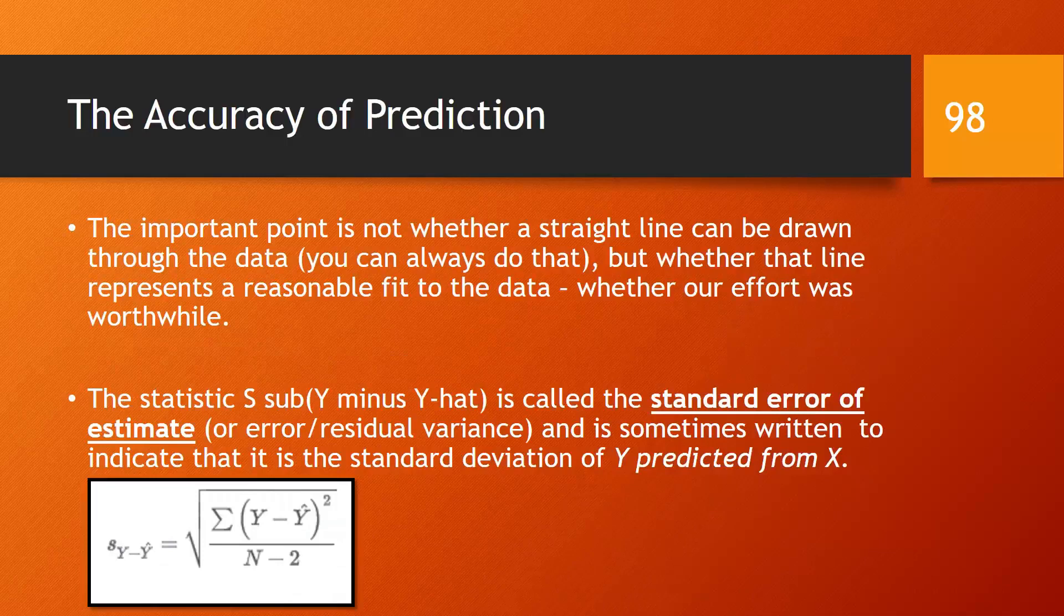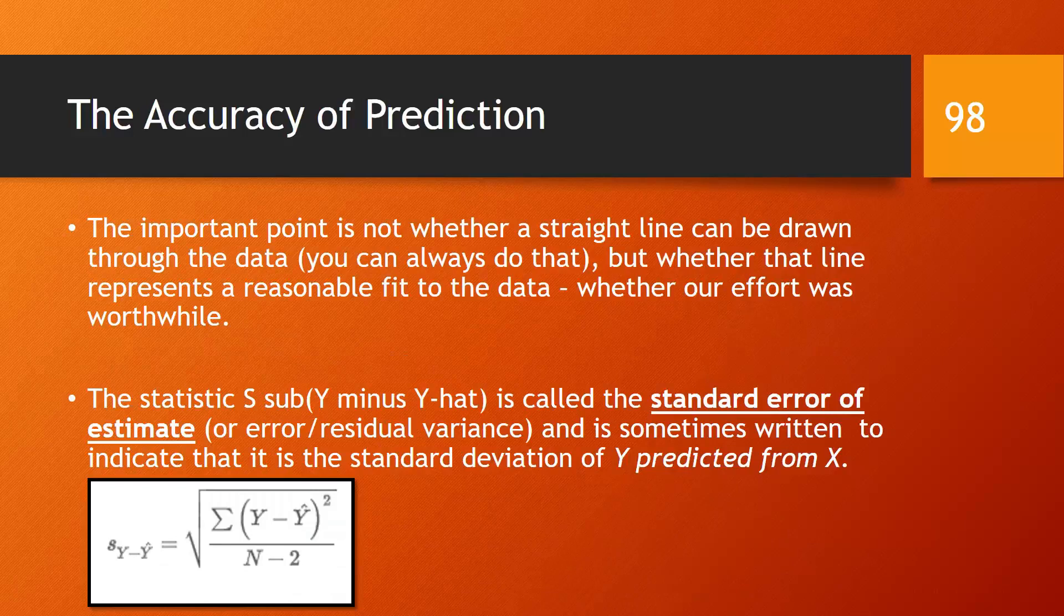When we talk about the accuracy of prediction, the important point is not whether we can draw a straight line through the data. Rather, we are most concerned as to whether the line represents a reasonable fit to the data. The standard error of the estimate indicates that it is the standard deviation of Y predicted by X. It is also referred to as residual or error variance. The error associated with our prediction is a function of the deviations of Y about the predicted point. In this case, the predicted point is Y hat rather than the mean of Y.